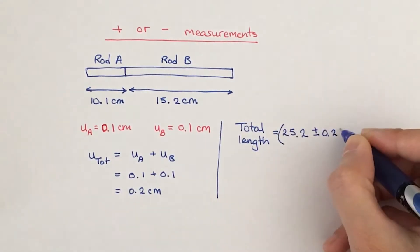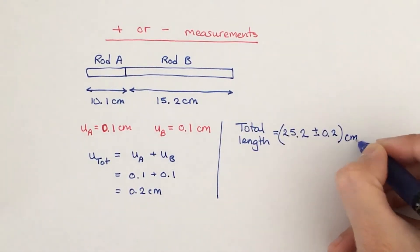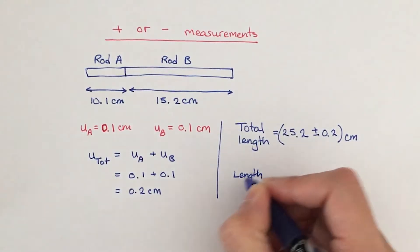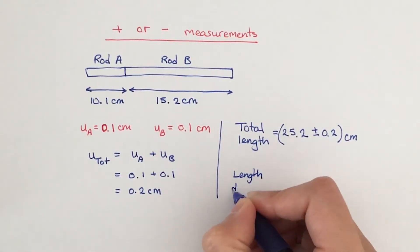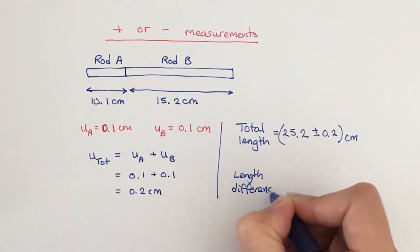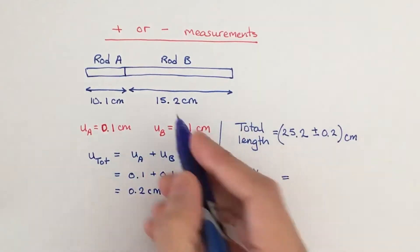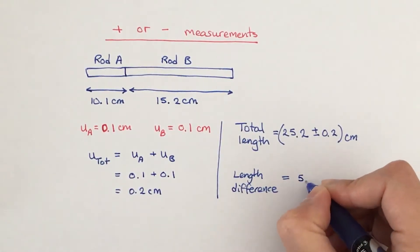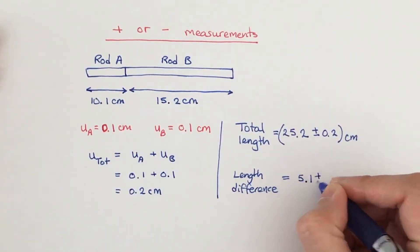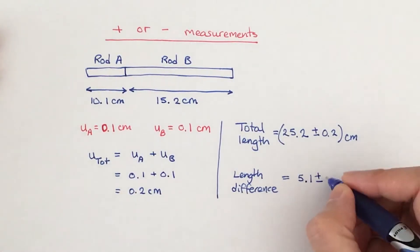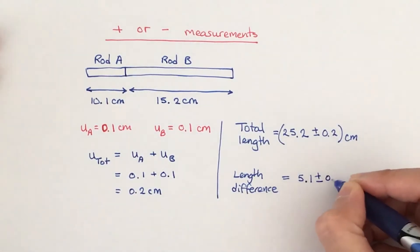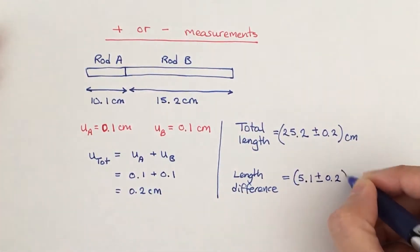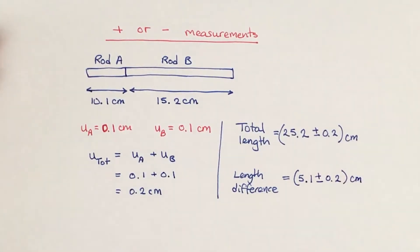What if you subtract them? If you subtract the length of rod A from rod B, the difference in their length becomes 5.1 centimeters. Notice here you still add their absolute uncertainties. So the rule is: whether you're adding or subtracting measurements, you always add their absolute uncertainties.